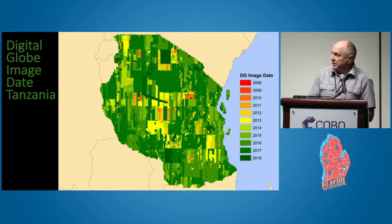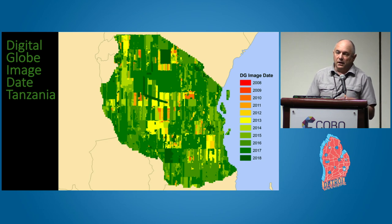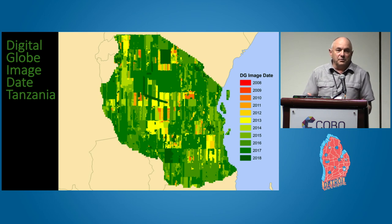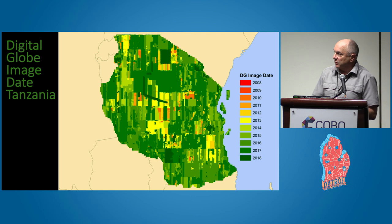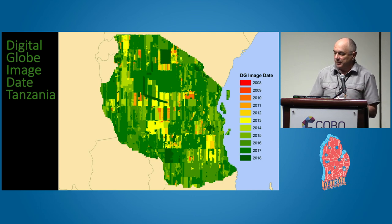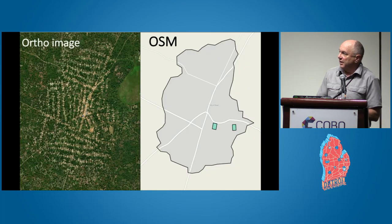The challenge with the DigitalGlobe data is the irregularity of the vintage of the imagery. In some places it's 10 years old, in others it's current. I continually get questions on the CrowdMap Slack channel about which imagery to use and which is best. The answer is always: it depends on where you are, because sometimes you'll have areas that are just a few days old, and other times it's not nearly as current.